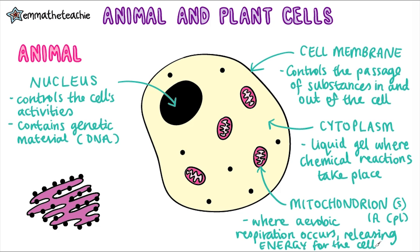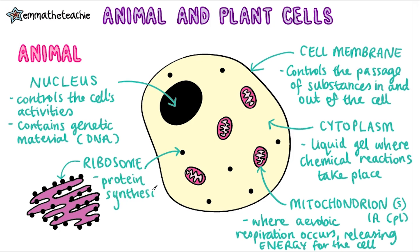Now we've got a little tiny black dot over here and we call this little guy a ribosome. You can also sometimes see the ribosomes attached to this structure, and you'll learn more about this if you do A-level biology, but for now just look for the little tiny black dots. Its function is protein synthesis, which is just a fancy way of saying making proteins.